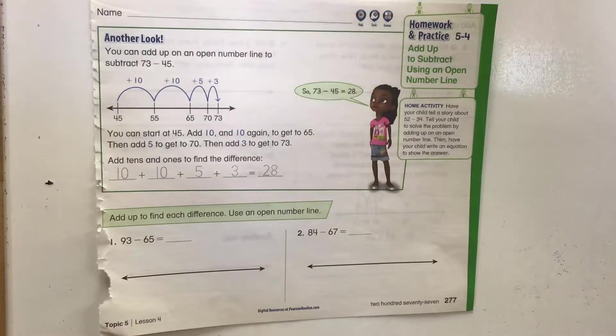This is homework practice 5-4. This is another strategy that students can use to add up on a number line to subtract.